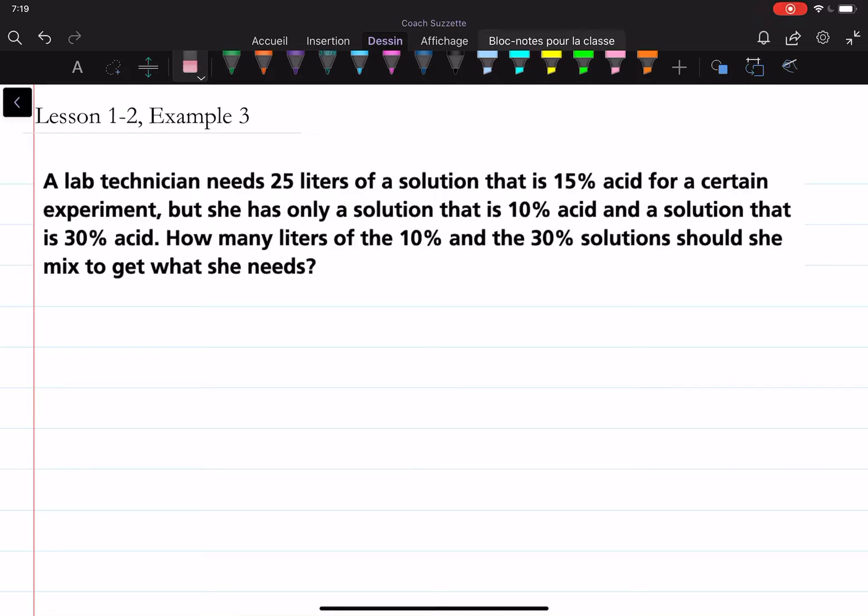Okay, so there's a lot of information. Let's break it down. This first part with 25 liters of a 15% acid solution means that there are 0.15 units of acid in one liter of the solution.